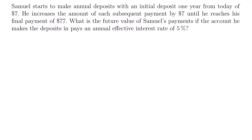Welcome back. Let's start with this example. Samuel starts to make annual deposits with an initial deposit one year from today of $7. He increases the amount of each subsequent payment by $7 until he reaches his final payment of $77. What is the future value of Samuel's payments if the account pays an annual effective interest rate of 5%?